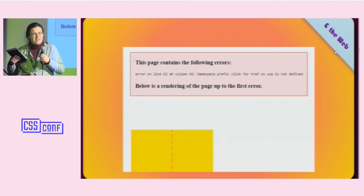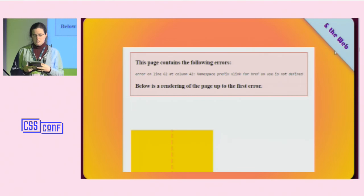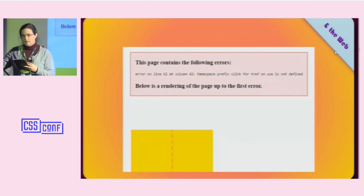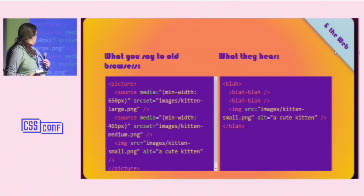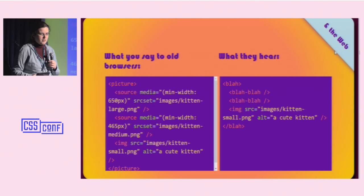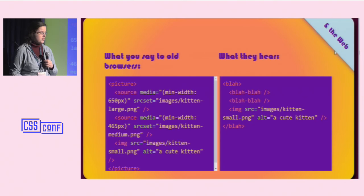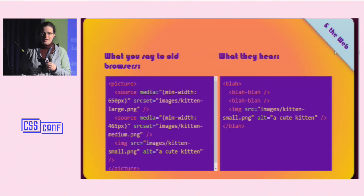For example, we have the picture element. It's all this cool new functionality, but at its very core it's just a basic IMG element. So if you send modern picture element markup to an old browser like IE8, it's like the Far Side cartoon of talking to a dog — it just hears "blah blah blah" until it gets to the part it understands: your image tag.